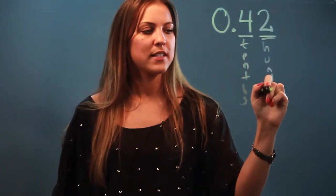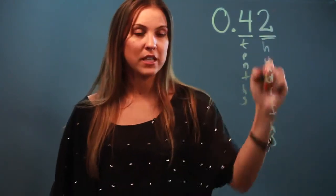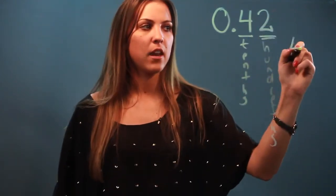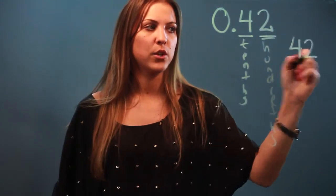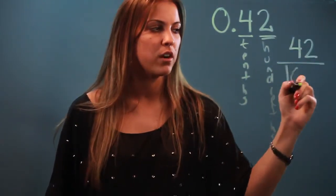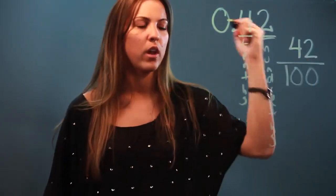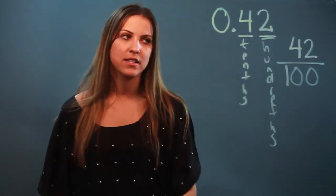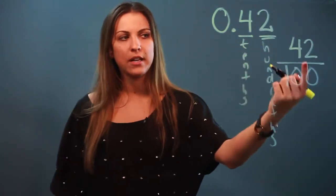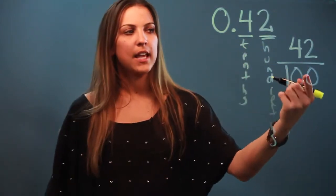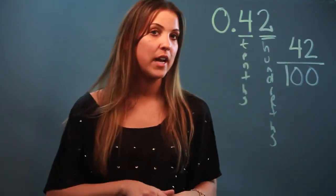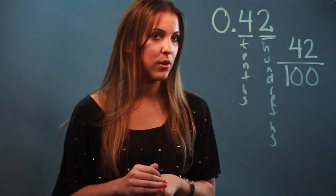So since your number ends in the hundredths place, what you're going to do is take that number, 42, and you're just going to write it over 100, and that's your fraction. So 0.42 as a decimal is the same thing as 42 over 100 as a fraction.